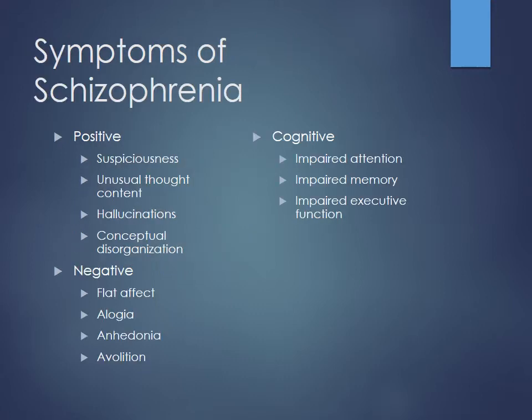Symptom classification is important because it guides medication selection. Symptoms break into three categories: positive, negative, and cognitive. Positive symptoms are things that are present but shouldn't be — paranoia, hallucinations, conceptual disorganization. Negative symptoms are things that should be present but aren't — flat affect, alogia, anhedonia, avolition, reduced speech. These patients can't really act on their own thoughts or wishes.